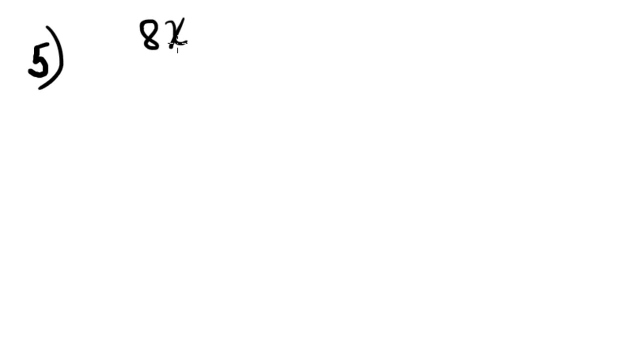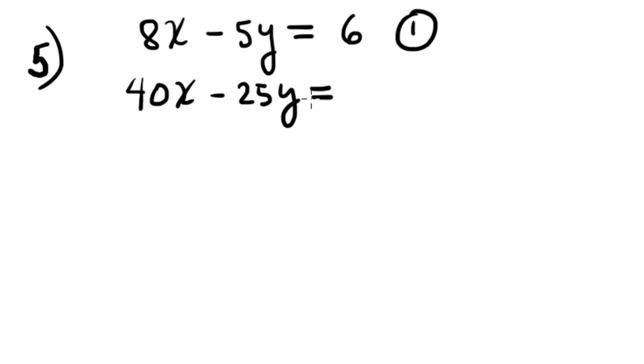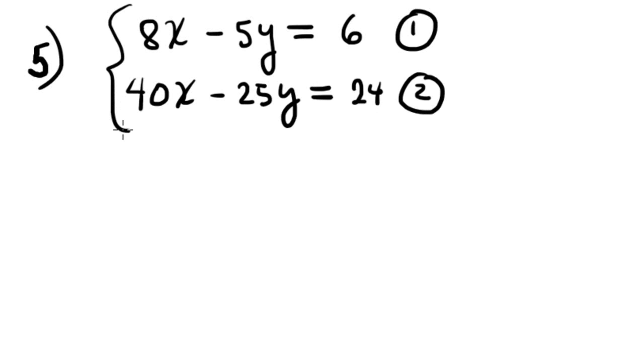Question 5: solve the system of equations. If the system has no solution, say it is inconsistent. The system is 8x minus 5y equals 6, equation 1, and equation 2. We apply elimination — multiply the first equation by negative 5.